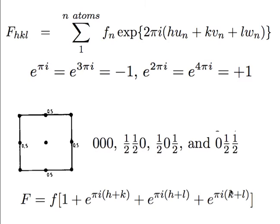The structure factor is F(hkl) = Σ f · exp(2πi(hu + kv + lw)), where hkl is the plane of interest and uvw is the location of the atom inside the unit cell. If all atoms are identical you can take f outside the summation. For a primitive cubic, uvw = (0,0,0) — that is the location of the only atom. But for face-centered cubic these are the values of uvw that you substitute into this summation.